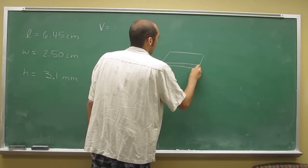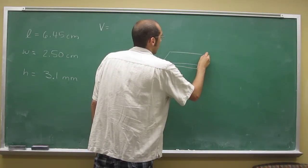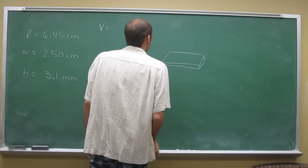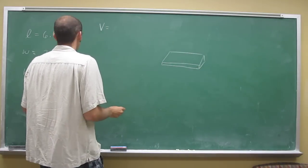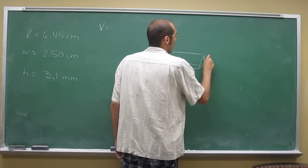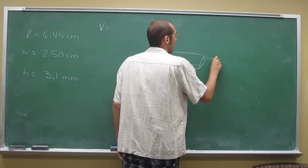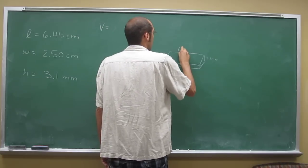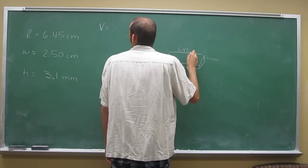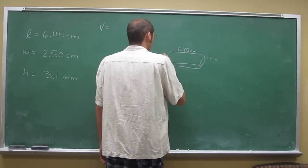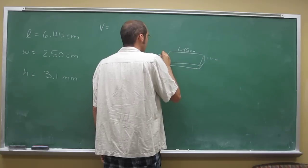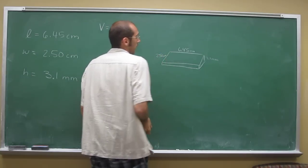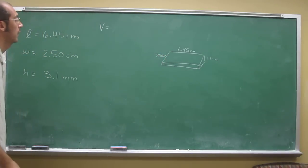So if you think about this, this part is 3.1 millimeters here—that's the thickness. The length is going to be 6.45 centimeters, and the width is going to be 2.50 centimeters. That's what you're looking at there.